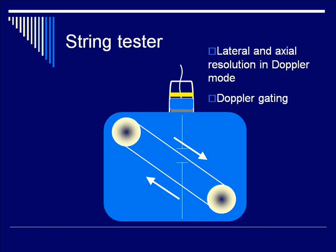You would take the color patch of the Doppler and measure it in the axial and in the lateral directions. This can also measure how accurate your placement for Doppler gating is on the screen when we're looking at spectral Doppler.